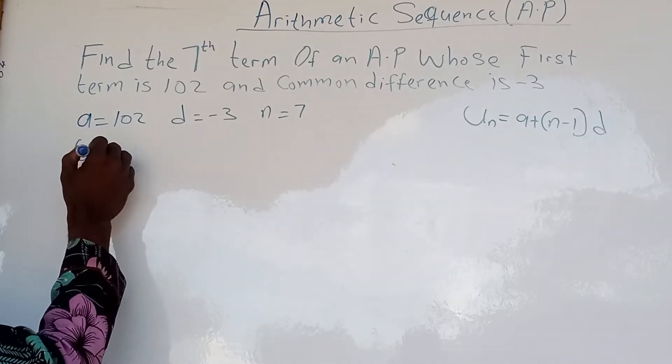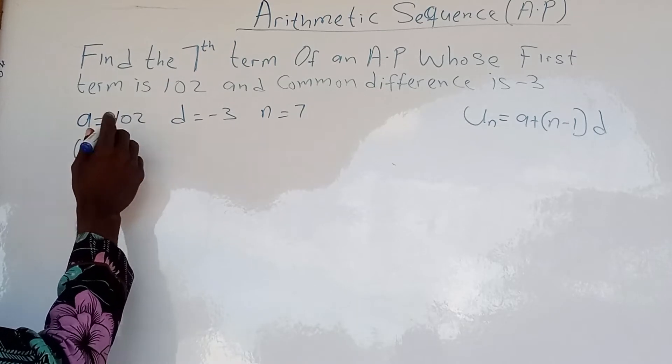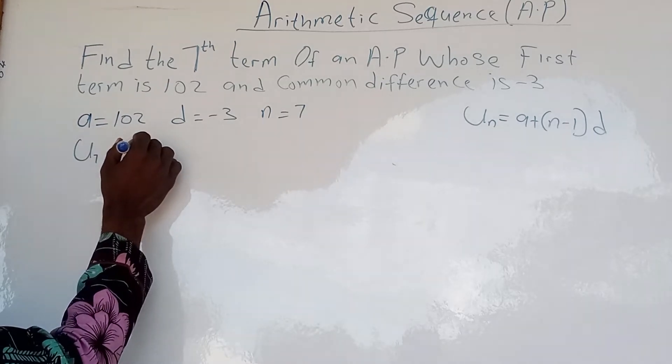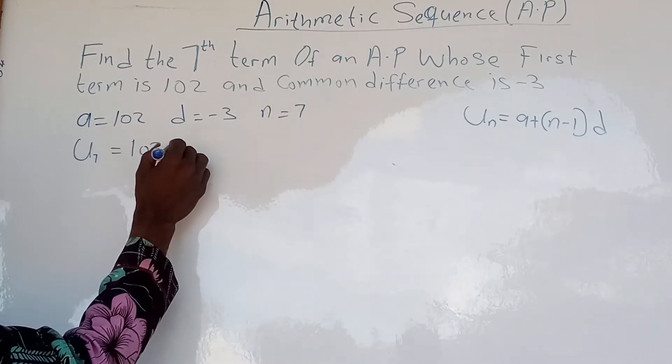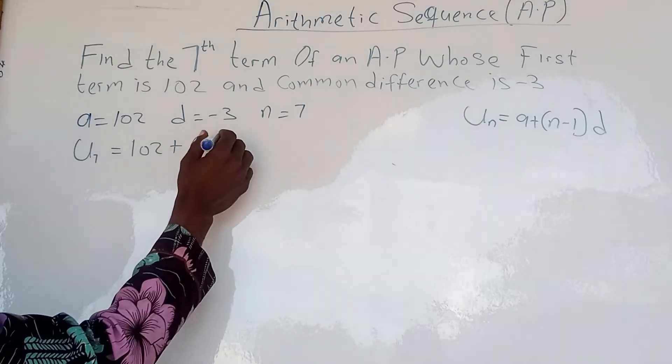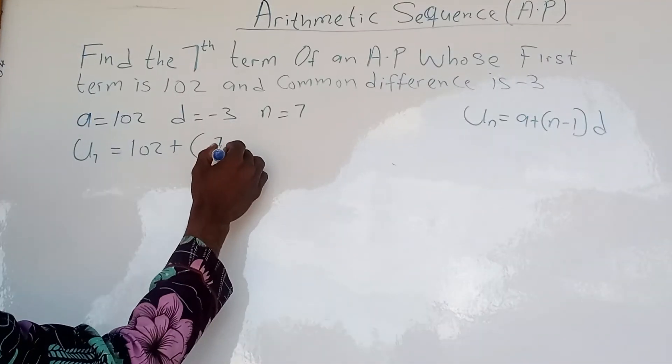We have U₇ equal to our first term which is A, 102, plus open bracket, our number of terms is 7 minus 1, our common difference minus 3.